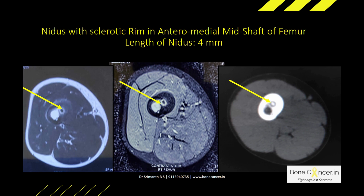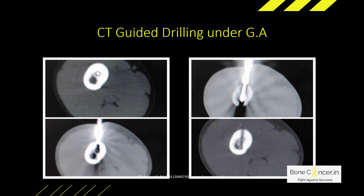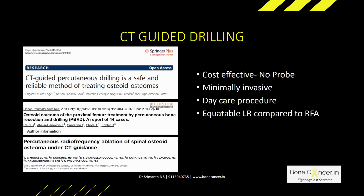We could identify the nidus with a thick sclerotic rim. As an alternative, we can go with CT-guided drilling under general anesthesia. This could be a standalone procedure or part of CT-guided radiofrequency ablation, and it has equitable outcomes compared to radiofrequency ablation.